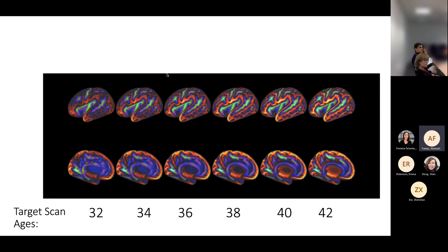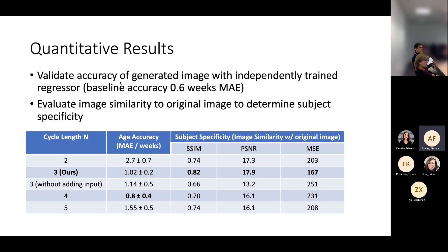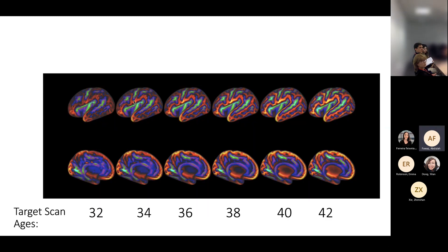Say I've generated a new image where the target scan age PMA is 34 — how do we validate that it worked? I have a separately trained, independently trained regressor. I feed it the image and ask what scan age it predicts. If it tells me 34.1, I've done pretty well. If it tells me this looks like a 36-week image, it's performed less well. That's a really good way of checking the accuracy of the age prediction.